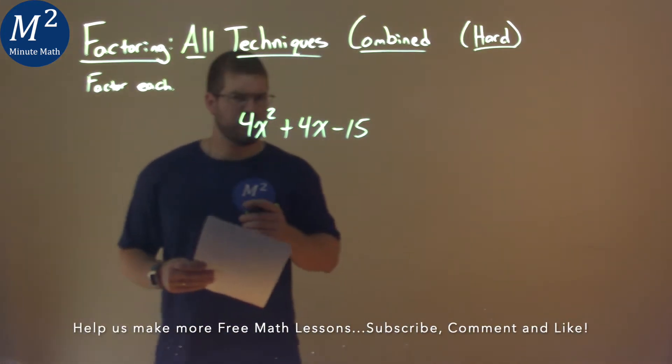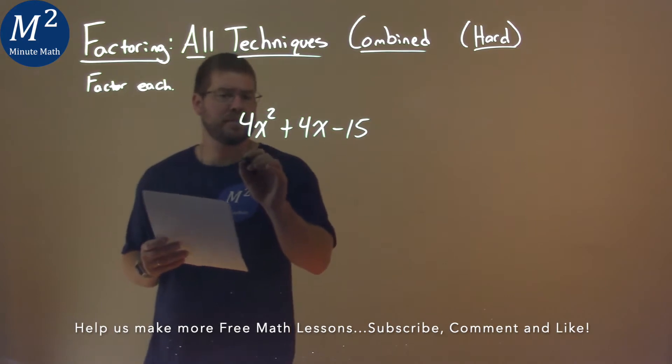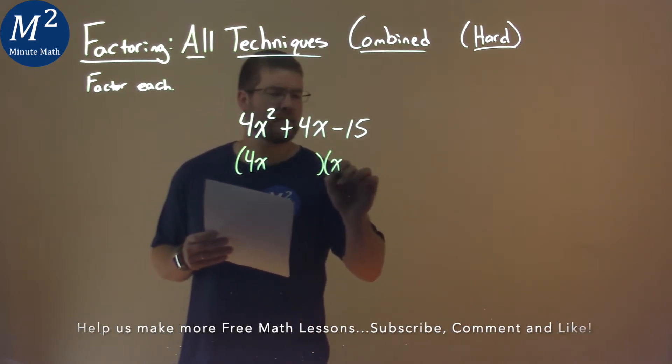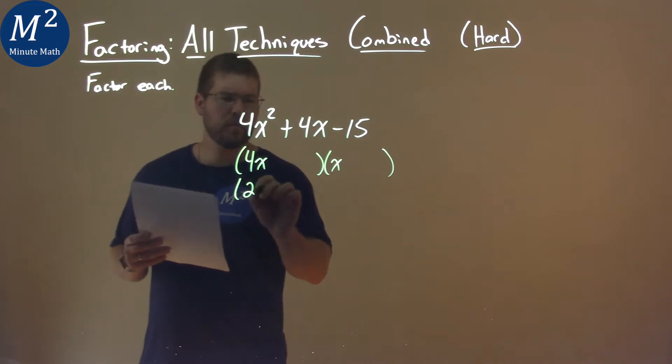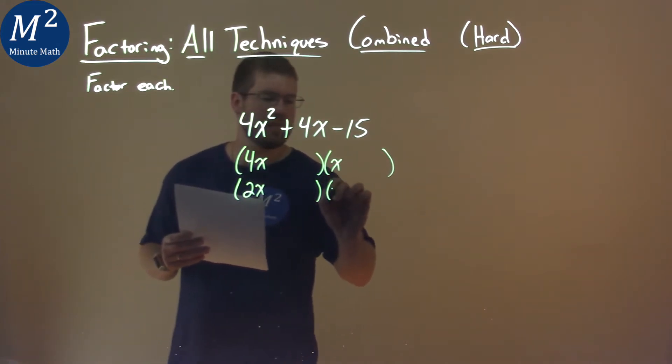Now our a value is 4 here, meaning we have two options to set up. That's 4x times an x like this, or a pair of 2x times 2x.